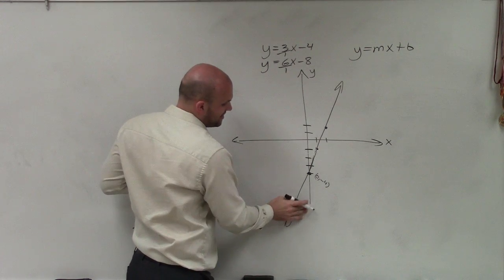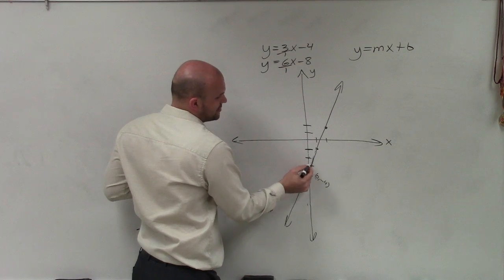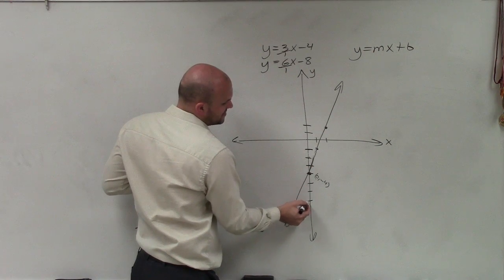The next one has a y-intercept of negative 8. I think I might have to go a little bit further down. So I go 1, 2, 3, 4, 5, 6, 7, 8.